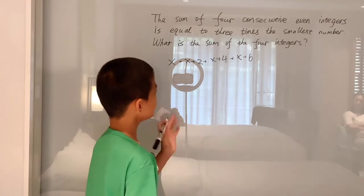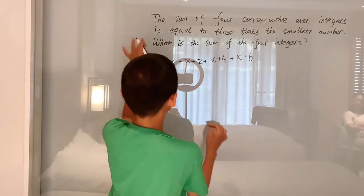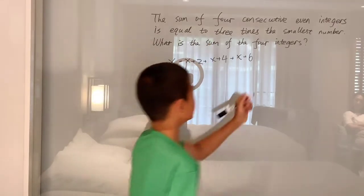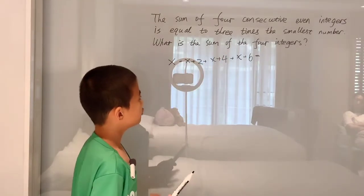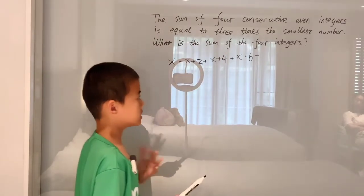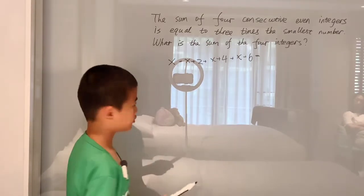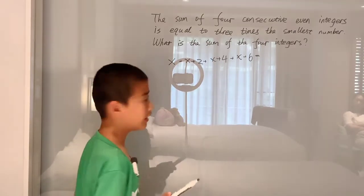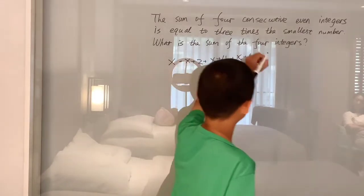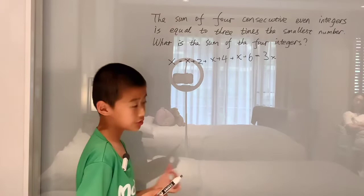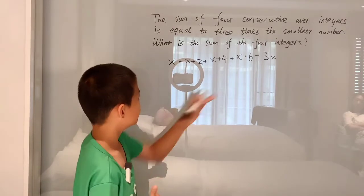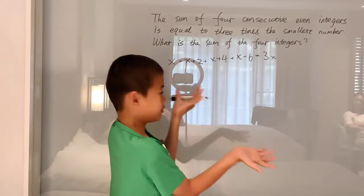What is this equal to? Is equal to just means an equal sign. Three times the smallest number—the smallest number is just X, right? Since X, you don't need to add anything to X, and all these other ones have something added onto them. So three times the smallest number is 3X. Now we have this equation.